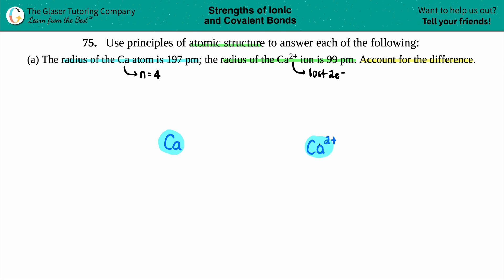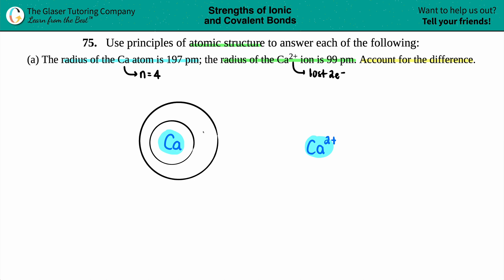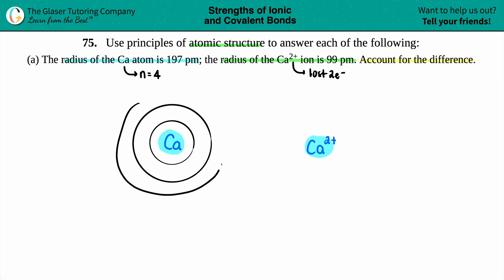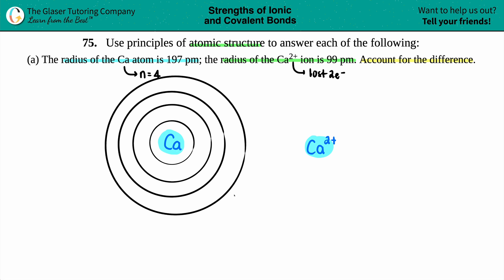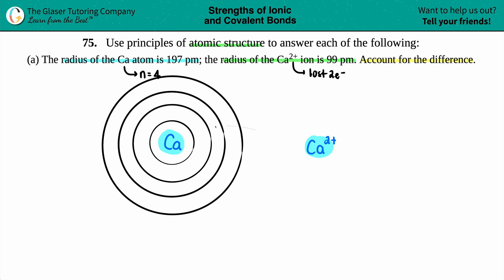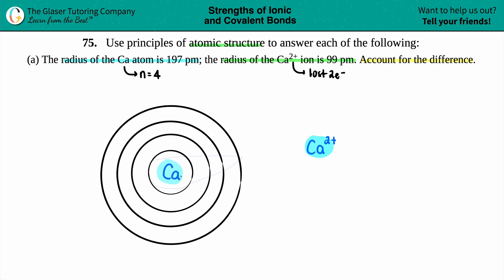Let's draw out our circles for the electron shells: n equals 1, n equals 2, n equals 3, and n equals 4. I'll draw the same set of four shells for the Ca2+ diagram as well.